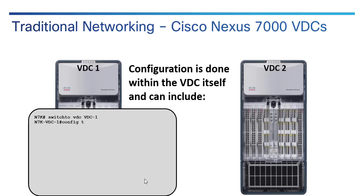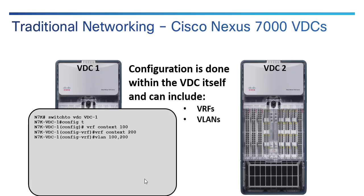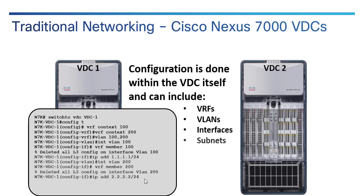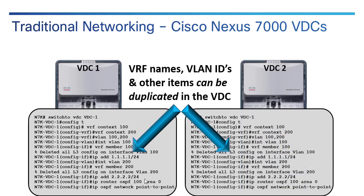VDC elements can include VRFs, VLANs, interfaces (the ones you assigned in previous steps), subnets, and routing protocols. You can have multiple routing protocols running in different VRFs, completely separate from one another unless you do some kind of route leaking. What's interesting is you can duplicate everything except the VDC name inside another VDC — they could be absolutely identical and they'll never see each other. You could duplicate names because they're completely segregated from one another.